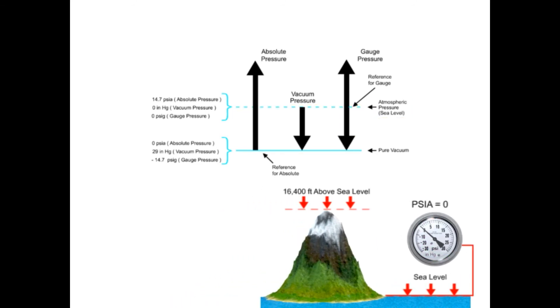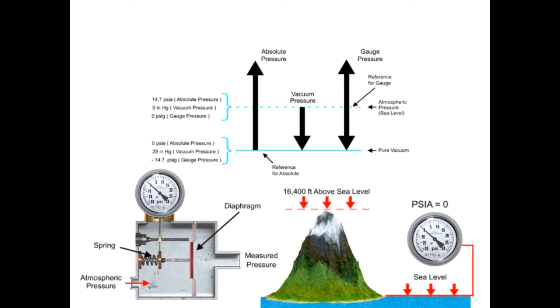Gauge pressure can also be measured with a mechanical diaphragm gauge. Using atmospheric pressure as the reference, the diaphragm bends towards the side with the lowest pressure that operates the spring that is mechanically linked to the gauge pointer.